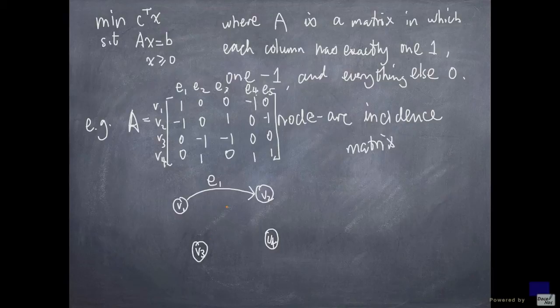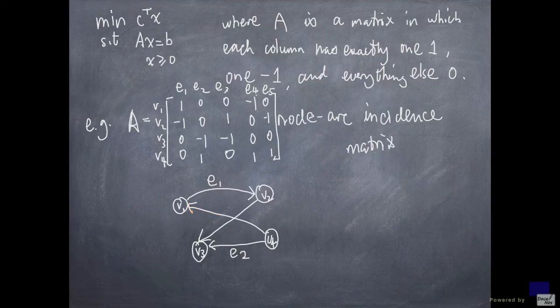I am going to do the same thing for e2. So e2 leaves v4 and enters v3. And finally, e5 is going to leave v4 and enter v1. So this is e4, e3, and finally, e5 is going to leave v4 and enter v2.